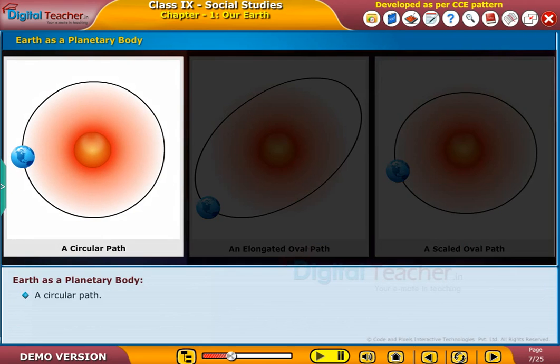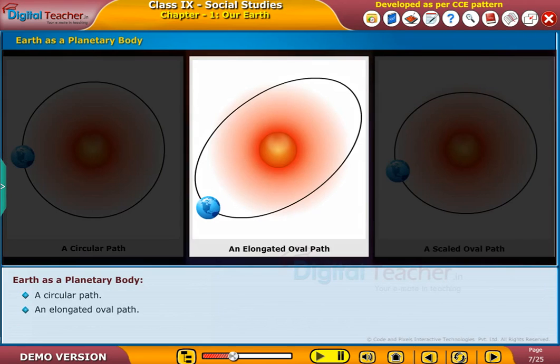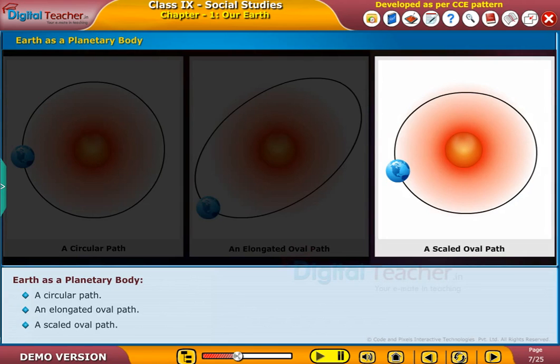A circular path, an elongated oval path, a scaled oval path. The Earth's orbit is a scaled oval path as the sun is at the center and 1.4 cm on one side and 1.5 cm on the other side.